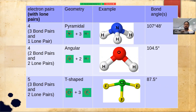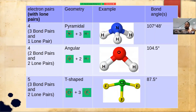In summary, VSEPR theory allows us to predict the shape of a molecule based on the number of electron pairs. When there are repulsions between lone pairs and bond pairs, or lone pair–lone pair repulsions, the molecule is distorted from the ideal shape and the bond angles are reduced or shortened.